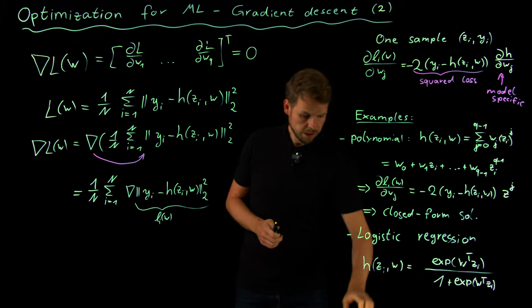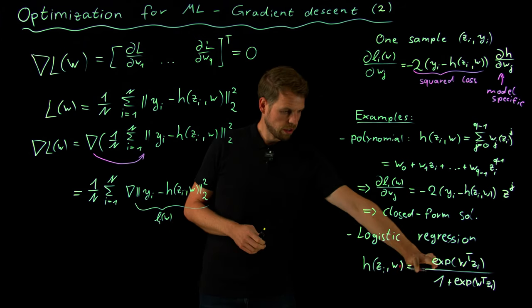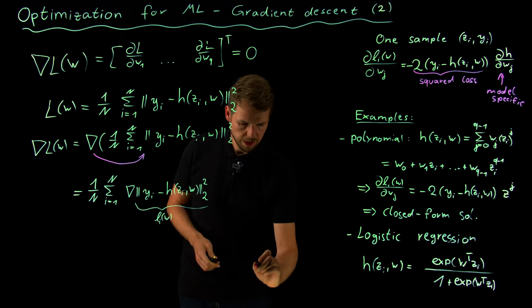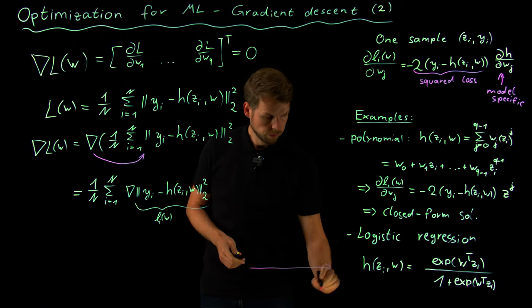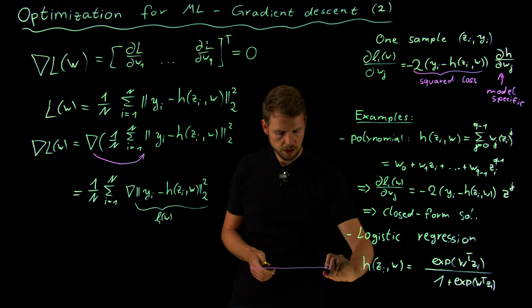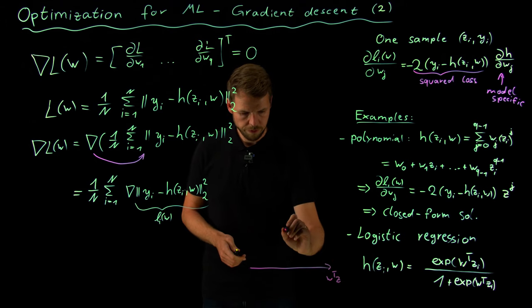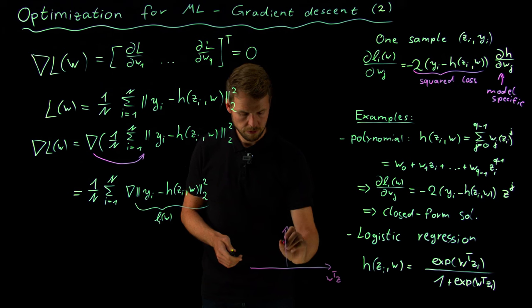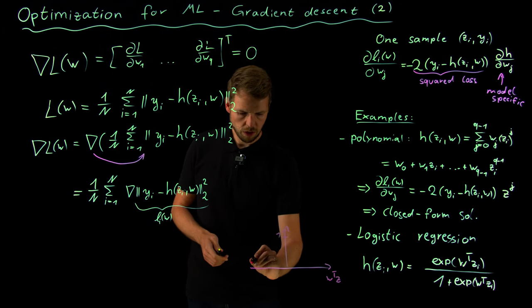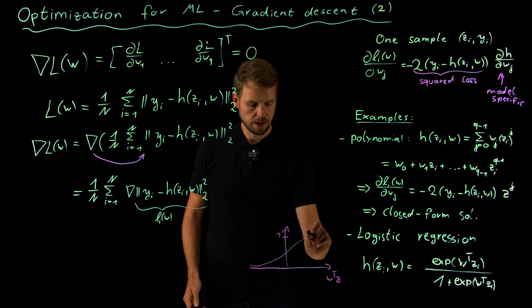But now let's look at this. What we see is that this logistic regression, what this expression gives us, is something like this: where if this argument w transpose z, which is a scalar, and this is between 0 and 1, something like this.